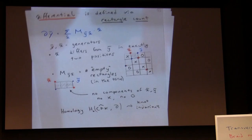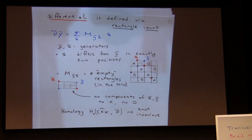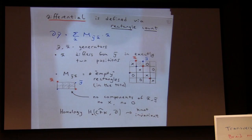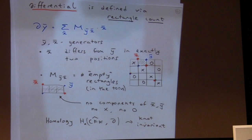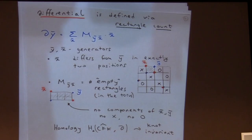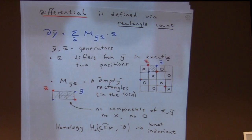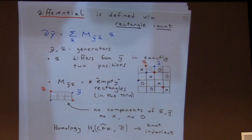The differential is defined by a rectangle count. Given a generator, the differential is a sum of other generators. Generator x enters the expression for generator y if x and y differ in exactly two positions — you flip two points. The coefficient counts the number of rectangles connecting x and y, where x should be two corners and y the opposite corners. The rectangles are required to be empty: no X's, no O's, and no marked points.